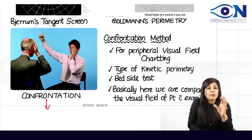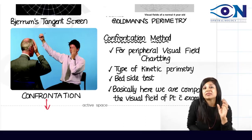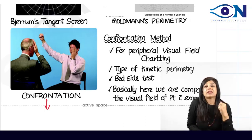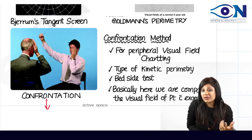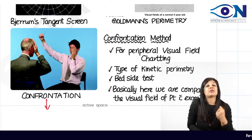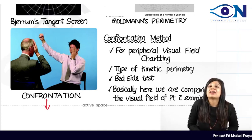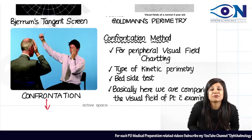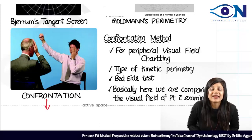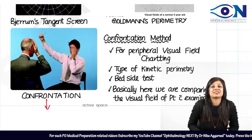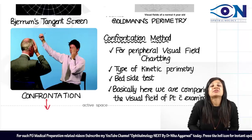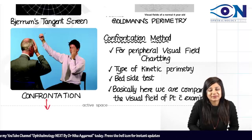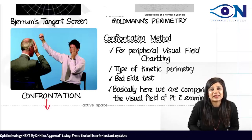I hope you have understood the basic concept of this question — the test of stereopsis, the Titmus fly test, the different kinds of perimetry, and the color vision charts. Stay tuned for more clinical vignettes. Happy ophthalmology!